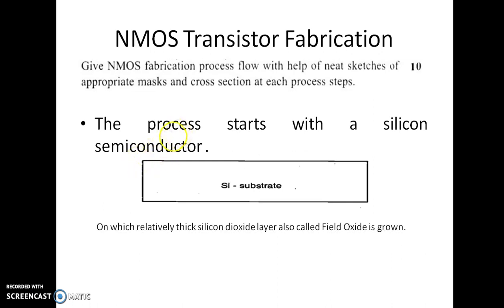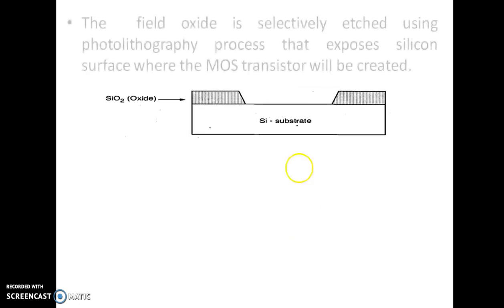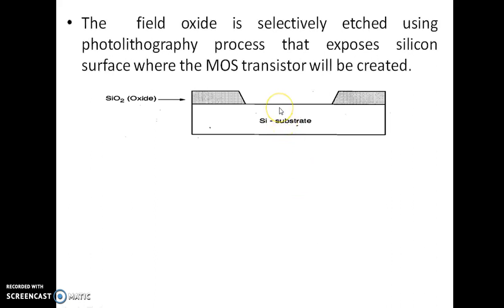On the silicon substrate, a relatively thick silicon dioxide layer, also called the field oxide layer, is grown by thermal oxidation. By thermal oxidation we create field oxide on the silicon substrate. This silicon dioxide layer is created on the silicon substrate by the thermal oxidation process.